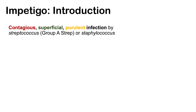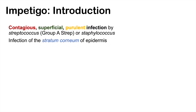Impetigo is a contagious, superficial, and purulent infection caused by bacteria of the Streptococcus and Staphylococcus genus. With Streptococcus, it's most often Group A strep. Impetigo is an infection of the stratum corneum of the epidermis, as opposed to other bacterial skin infections like Erysipelas and Cellulitis.